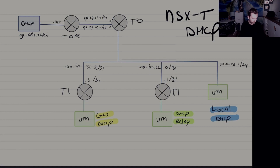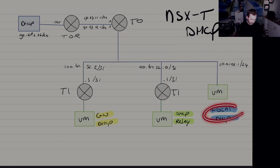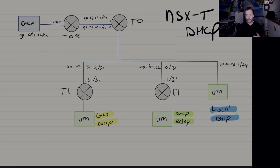This is basically the topology that I built. Within NSX-T you have three options for delivering DHCP services. You can configure DHCP services on your T0 router or on any T1 router. The first option is a local DHCP server on a segment — it's local to that segment and you cannot reuse it on any of the other segments.